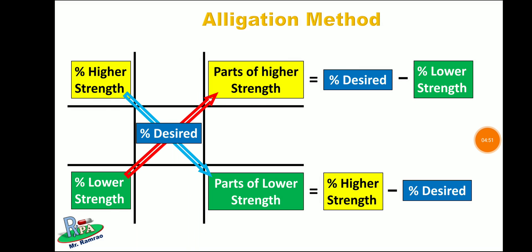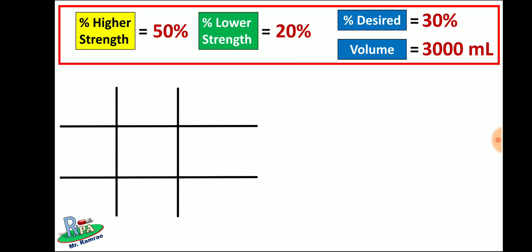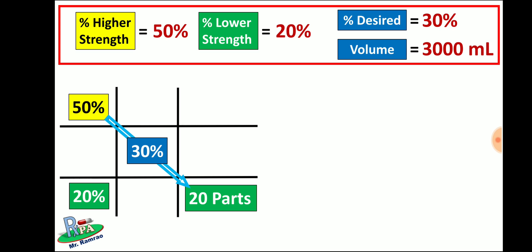Coming back to our question, these are the values provided. Draw the allegation matrix, then substitute the values: percent higher strength = 50%, percent lower strength = 20%, percent desired = 30%. Then calculate: 50% minus 30% gives 20 parts, and 30% minus 20% gives 10 parts.